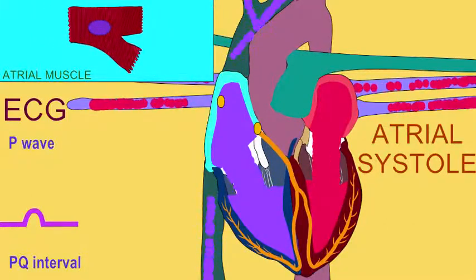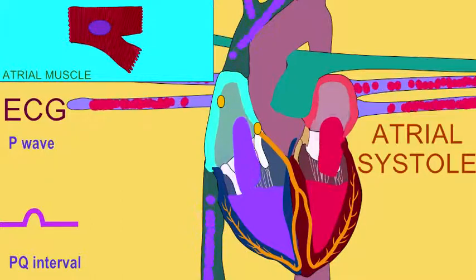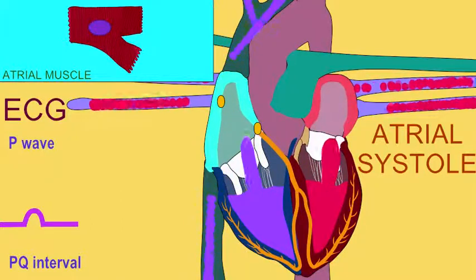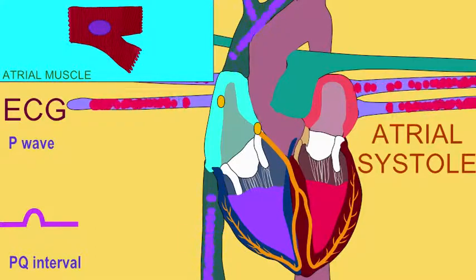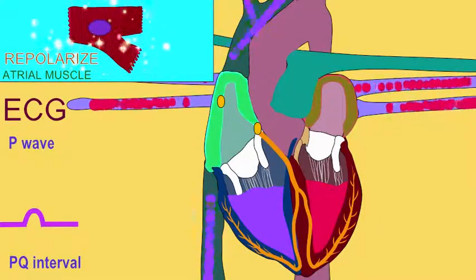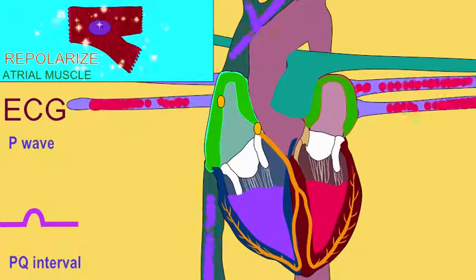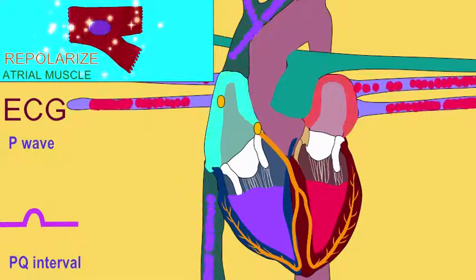During the second half of the P-Q interval, the atria are in systole, the AV valves are open, and the ventricles are filling as the last of the atrial blood is entering the ventricles. This will end in the QRS complex when the atria repolarize and the muscle stops contracting.